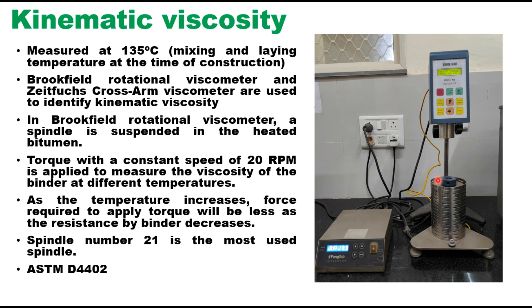In Brookfield rotational viscometer, a spindle is suspended in the heated bitumen and torque with a constant speed of 20 rpm is applied to measure the viscosity of the binder at different temperatures. As the temperature increases, force required to apply torque will be less as the resistance by the binder will decrease. And ASTM D4402 provides the complete procedure of finding viscosity using Brookfield viscometer and suggests spindle number 21 for determination of viscosity.